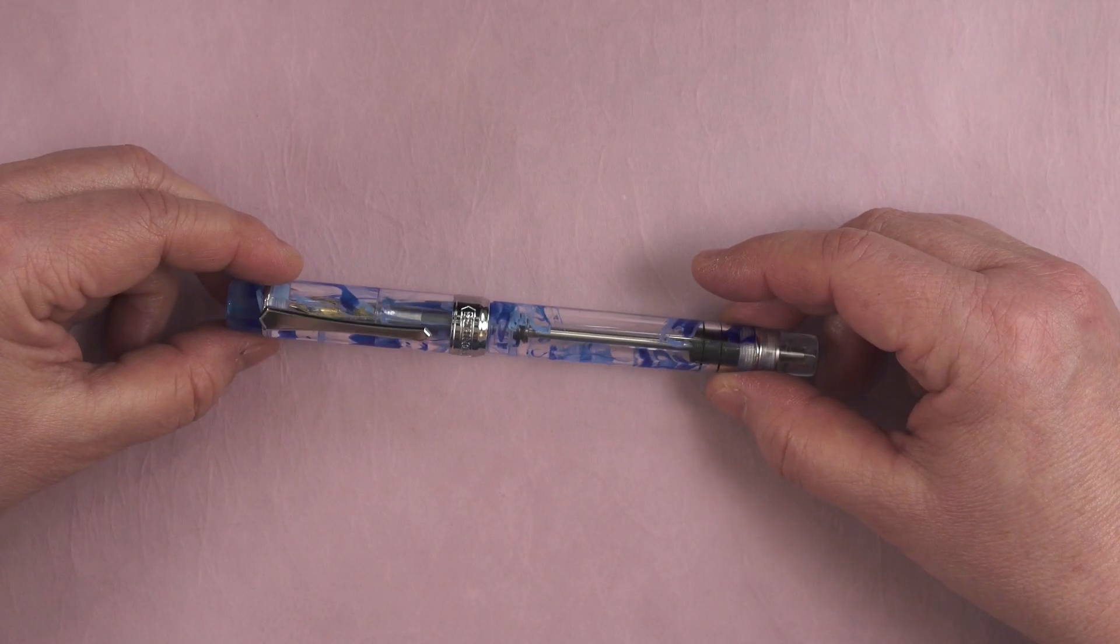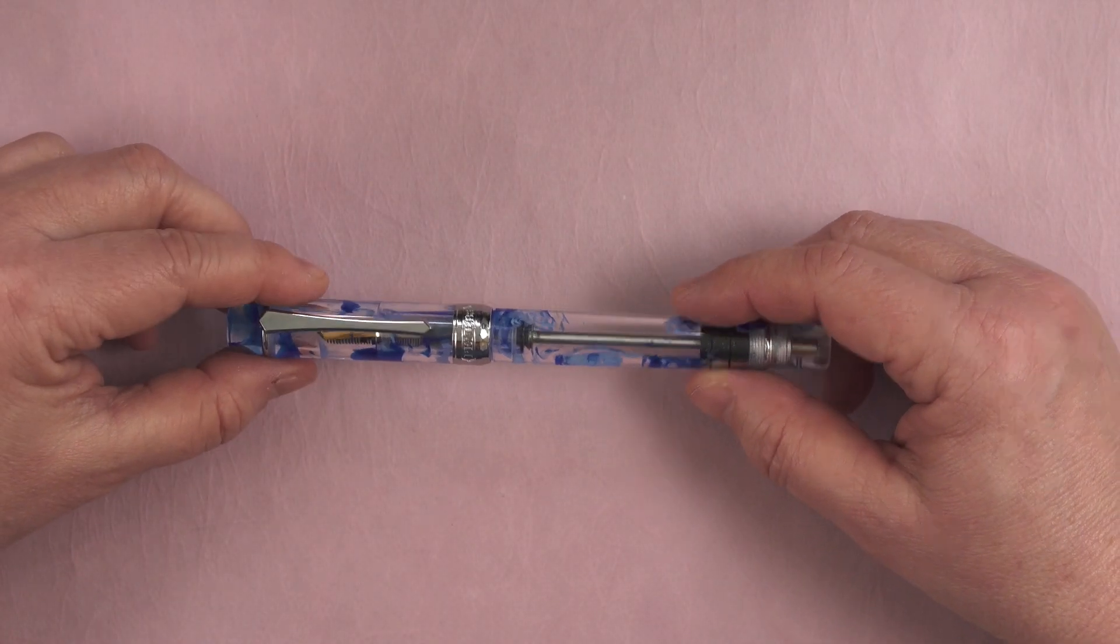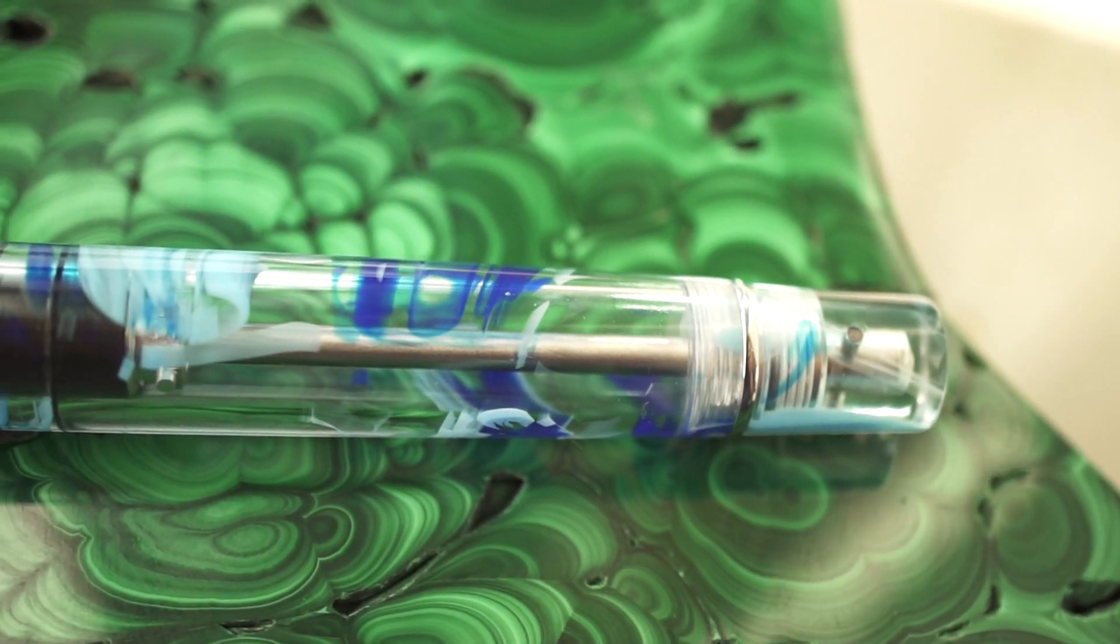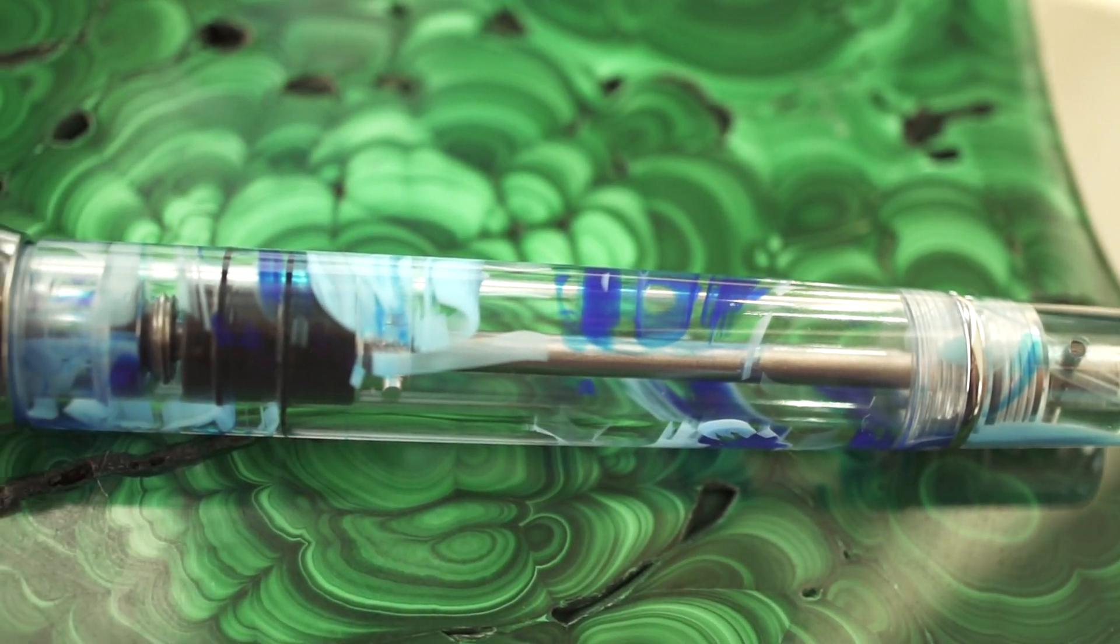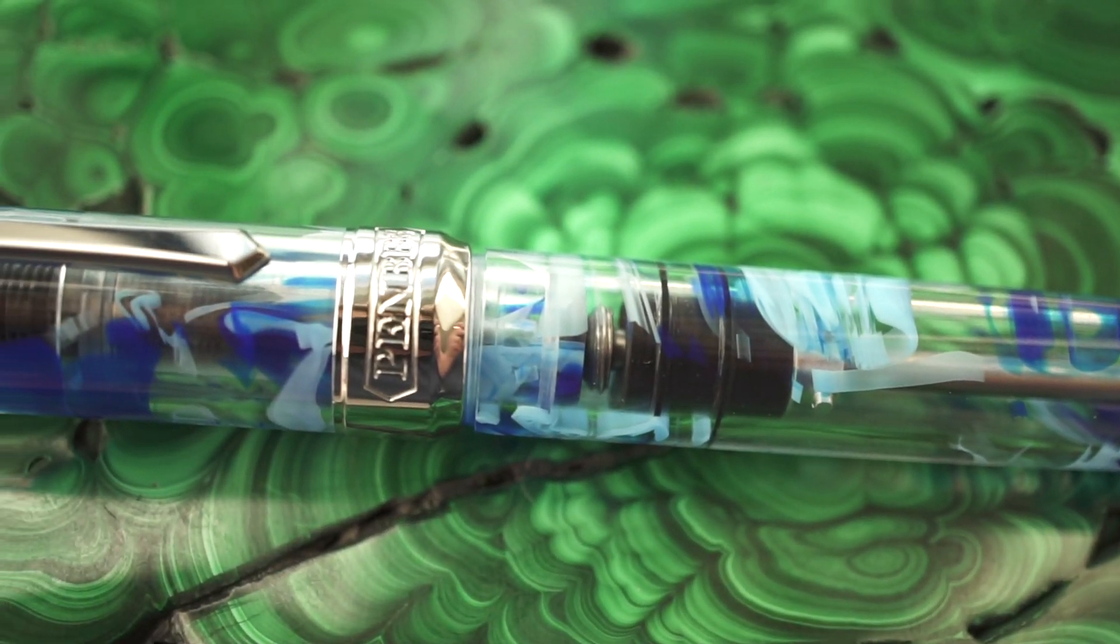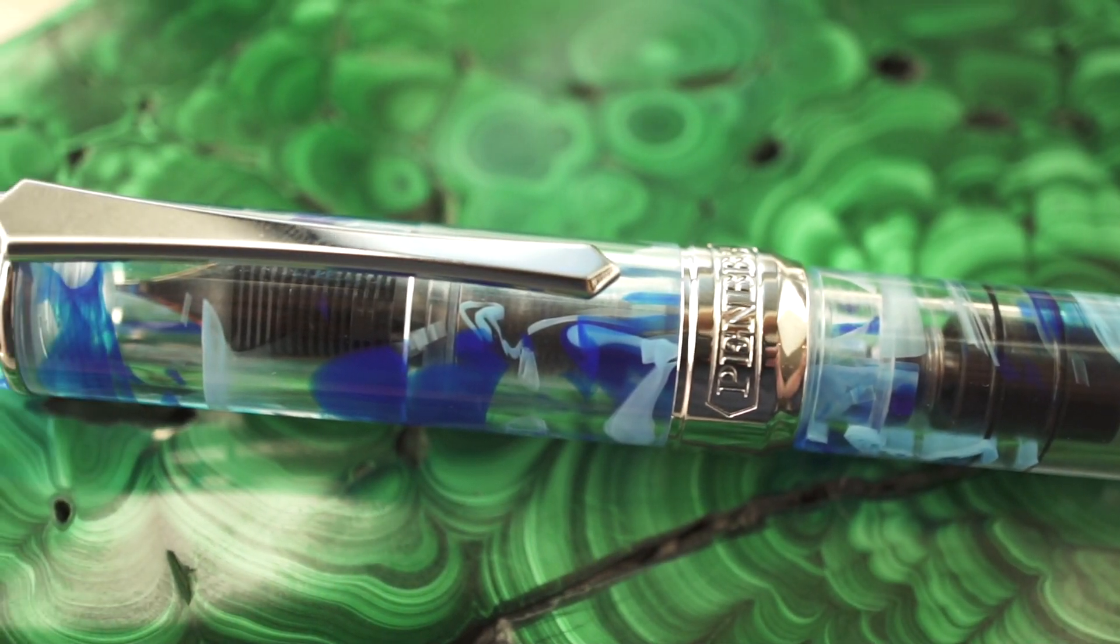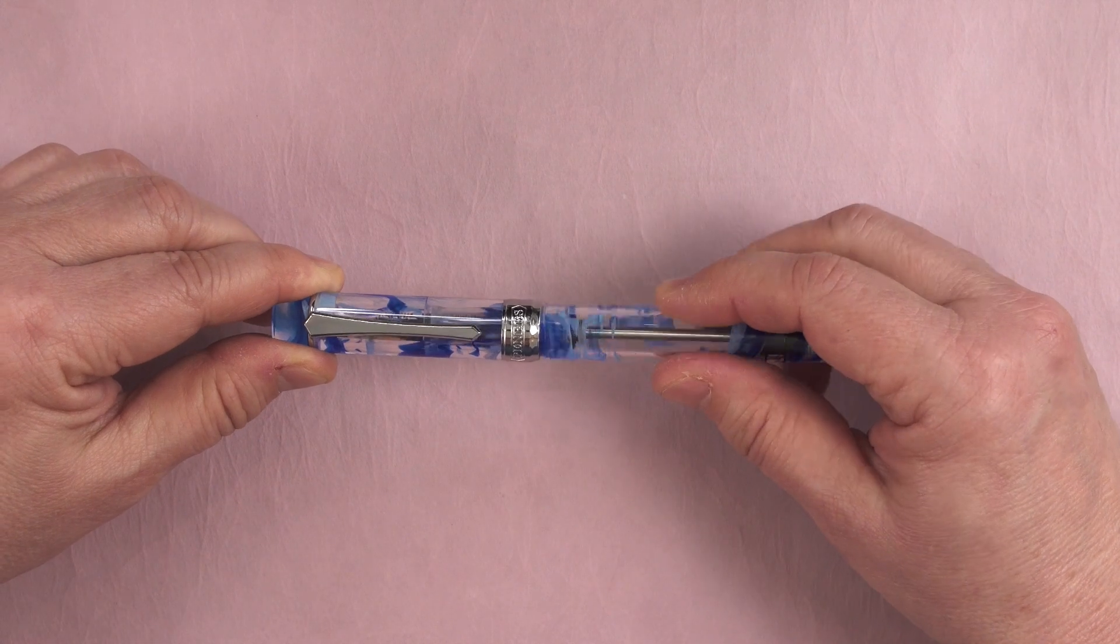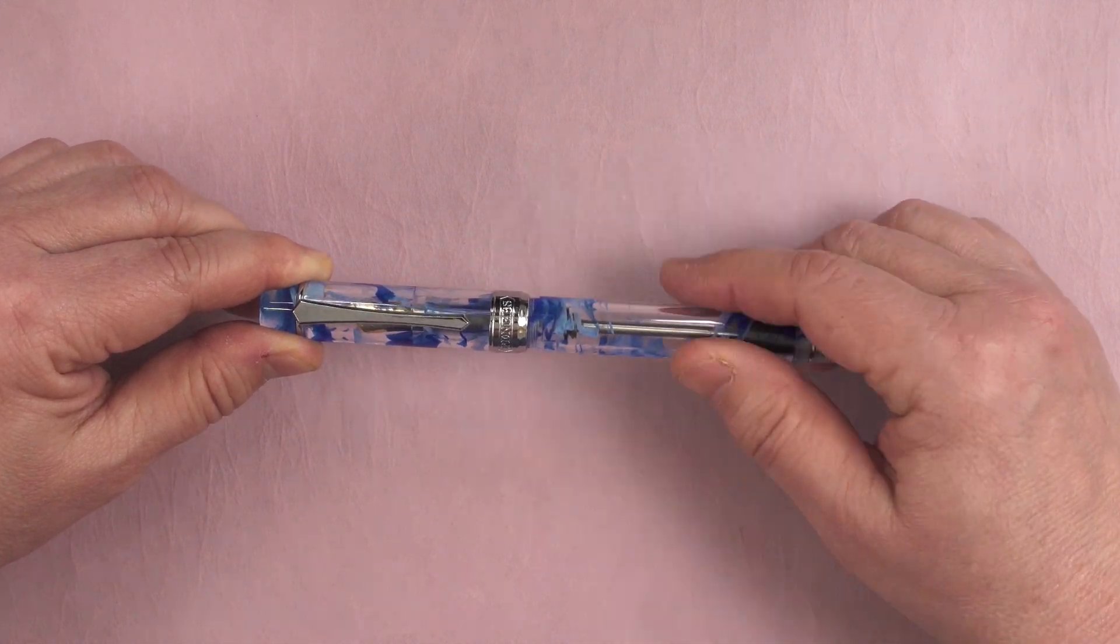The pen is a clear acrylic with dark and light blue swirls. There's silver hardware and then the typical PenBBS sword-like clip. PenBBS is printed on the front of the center band and 355 on the back side of the band. The pen uncaps right at two complete turns.